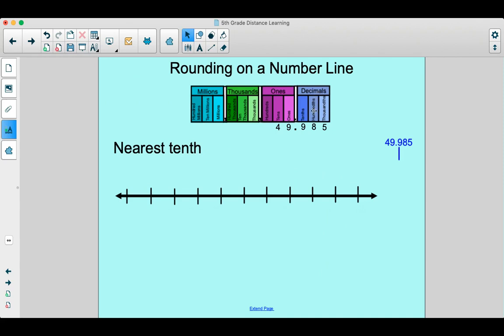All right, so let's check out rounding on a number line. But now we're going to round to the nearest tenth. We're going to check out the same number 49 and 985 thousandths.